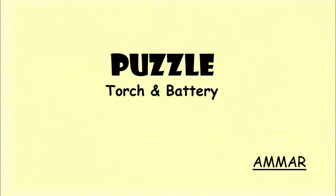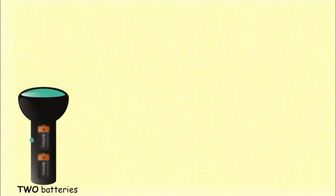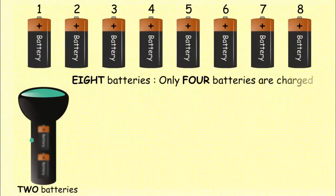What's up logical people, this is Ammar. You have a torch that requires two batteries to light up. You also have eight batteries out of which only four are charged and four batteries are not charged. But you don't know which four batteries are charged.